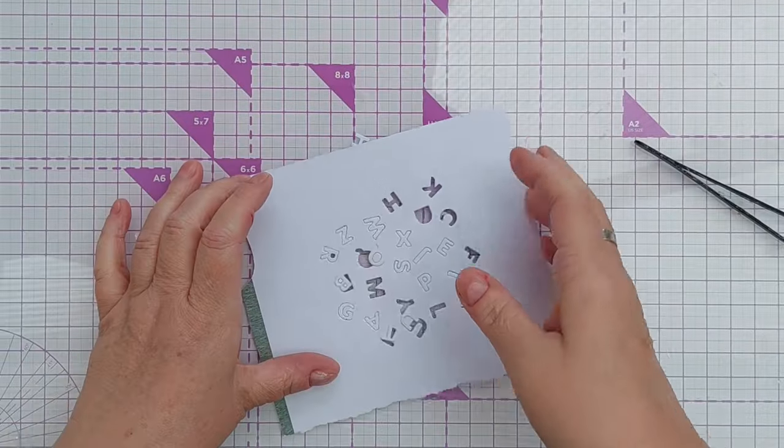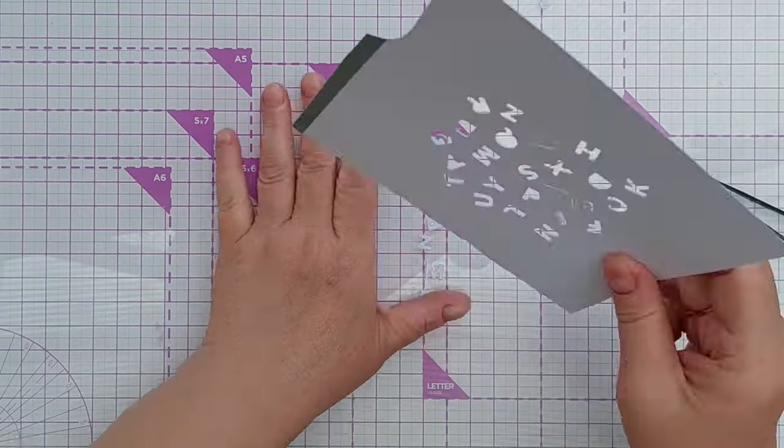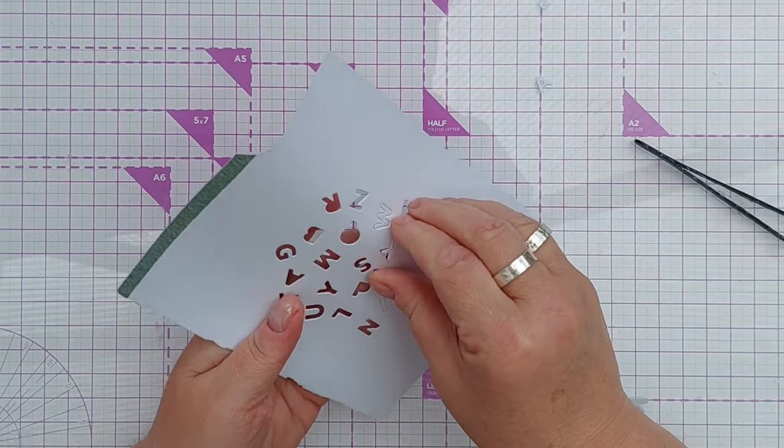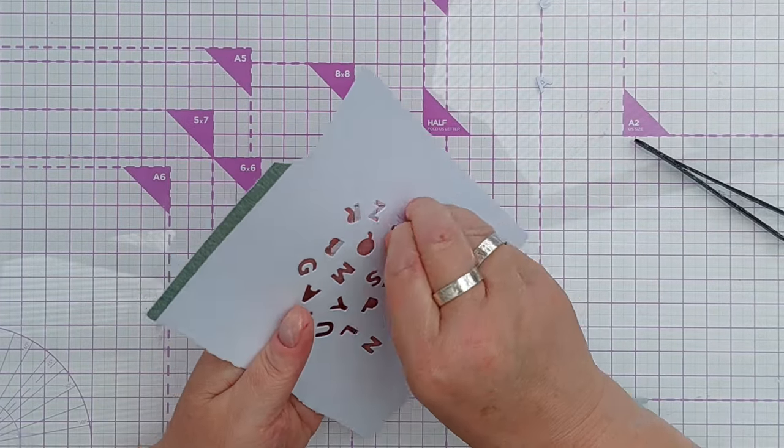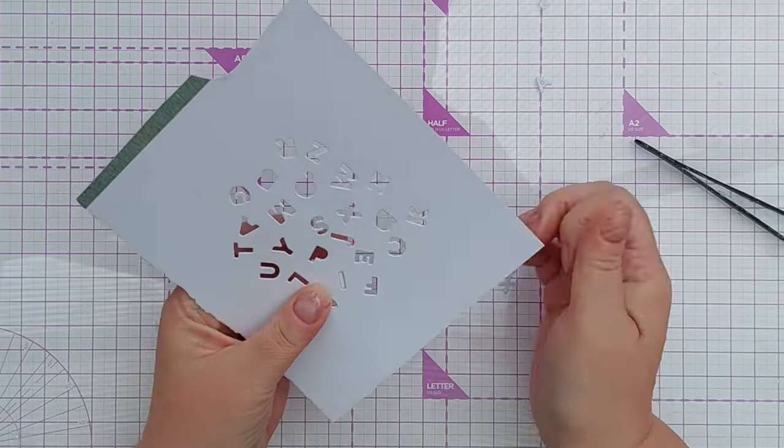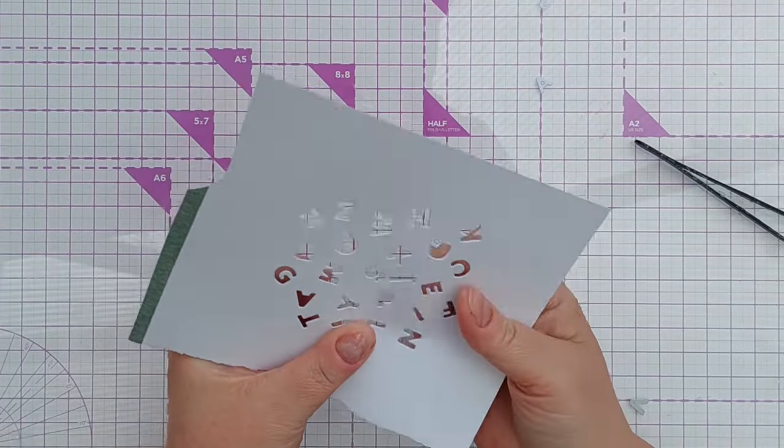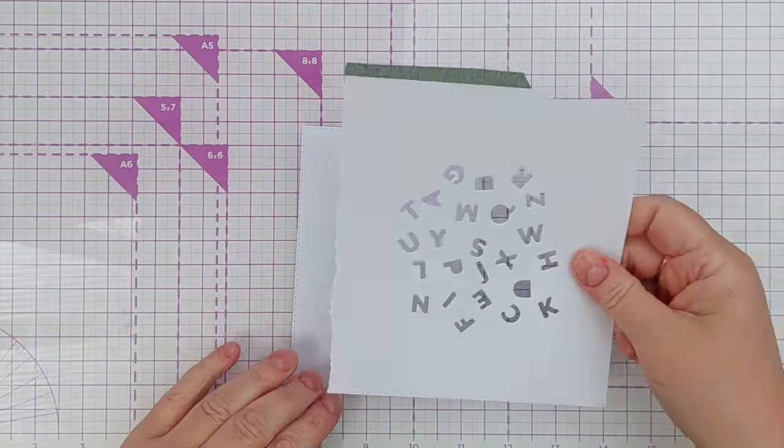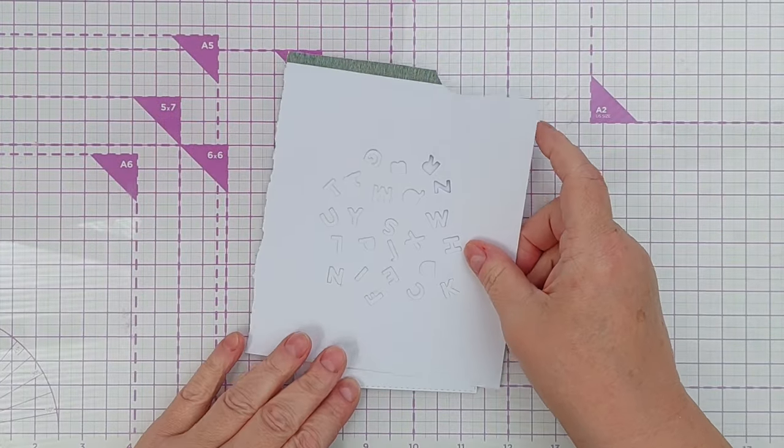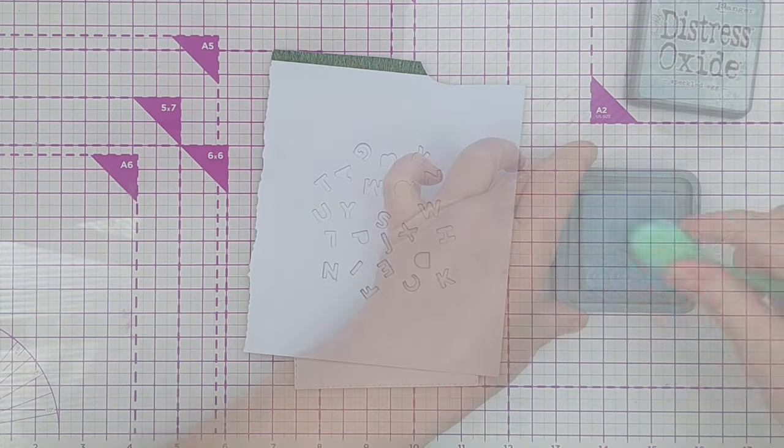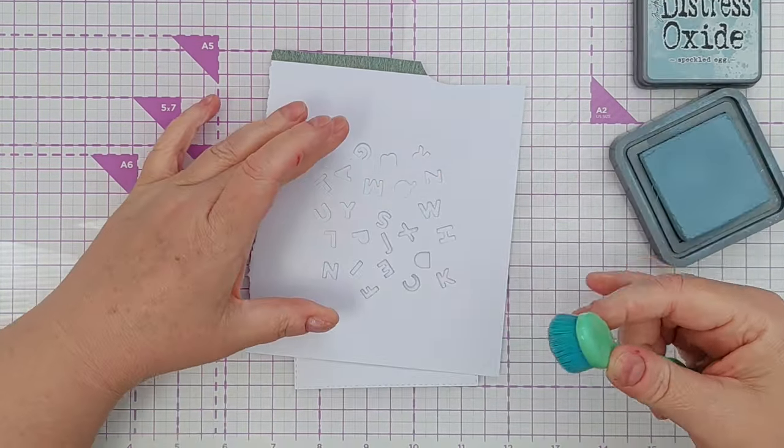Obviously you don't have to make a stencil with a random arrangement of letters. You could spell out some words, or you could do it in all one letter. Say you're making a birthday card for someone whose name begins with the letter B - you could just do lots of different B's. You can have them in straight lines, straight columns, arrange them however you want. I just went for a random arrangement because I wanted my stenciling to be background stenciling.